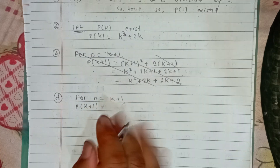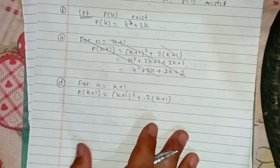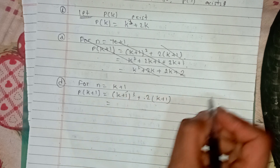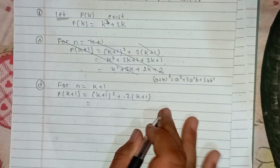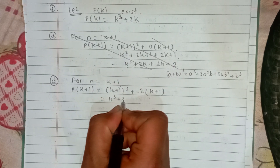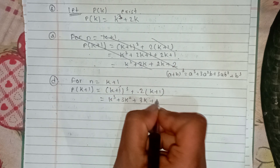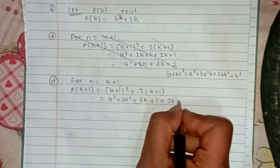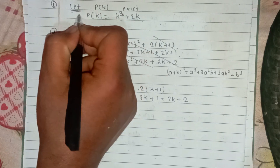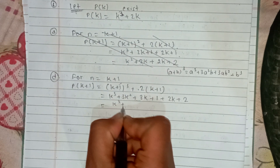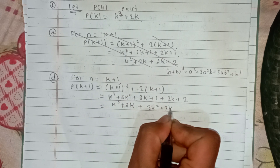P(k+1) is k plus 1 cube plus 2 into k plus 1. We expand using the formula: a plus b cube equals a cube plus 3a squared b plus 3ab squared plus b cube. So we get k cube plus 3k squared plus 3k plus 1 plus 2k plus 2, which gives k cube plus 2k plus 3k squared plus 3k plus 3.